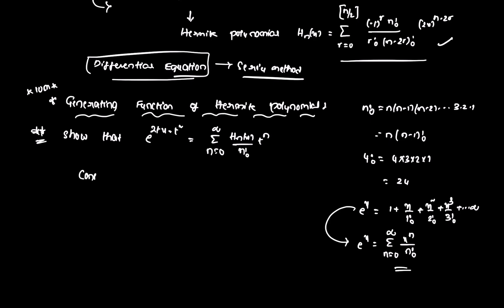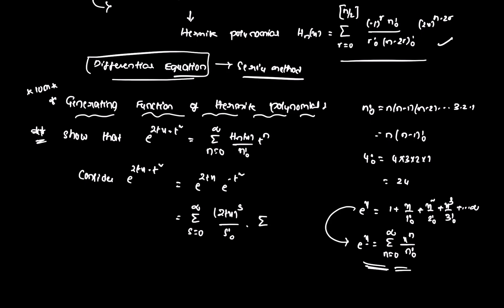First, consider e to the power (2tx minus t squared) as the LHS. We write this as e to the power 2tx times e to the power minus t squared. Using the exponential series form, e to the power 2tx becomes the summation from s = 0 to infinity of (2tx) to the power s divided by s factorial. And e to the power minus t squared becomes the summation from r = 0 to infinity of (minus t squared) to the power r divided by r factorial.